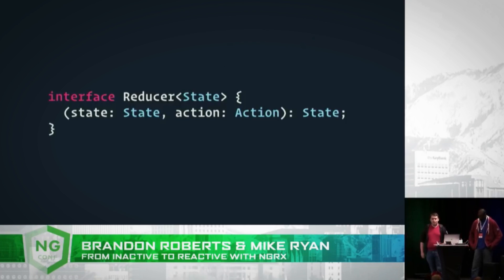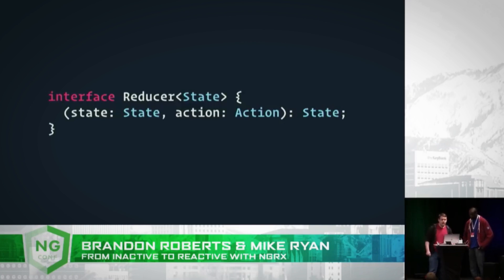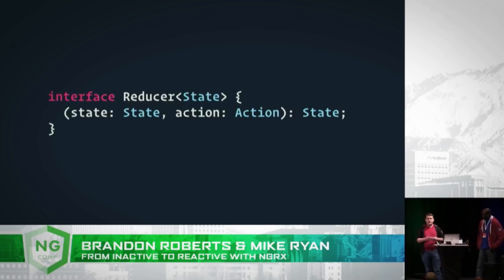While it's a simple interface, I want to point out a few gotchas. First, when our application starts up, state is going to be undefined, so the reducer function needs to know how to initialize state. Second, it always needs to return a new state object — it needs to be pure and return immutable state so that we're not mutating previous instances of that state object.